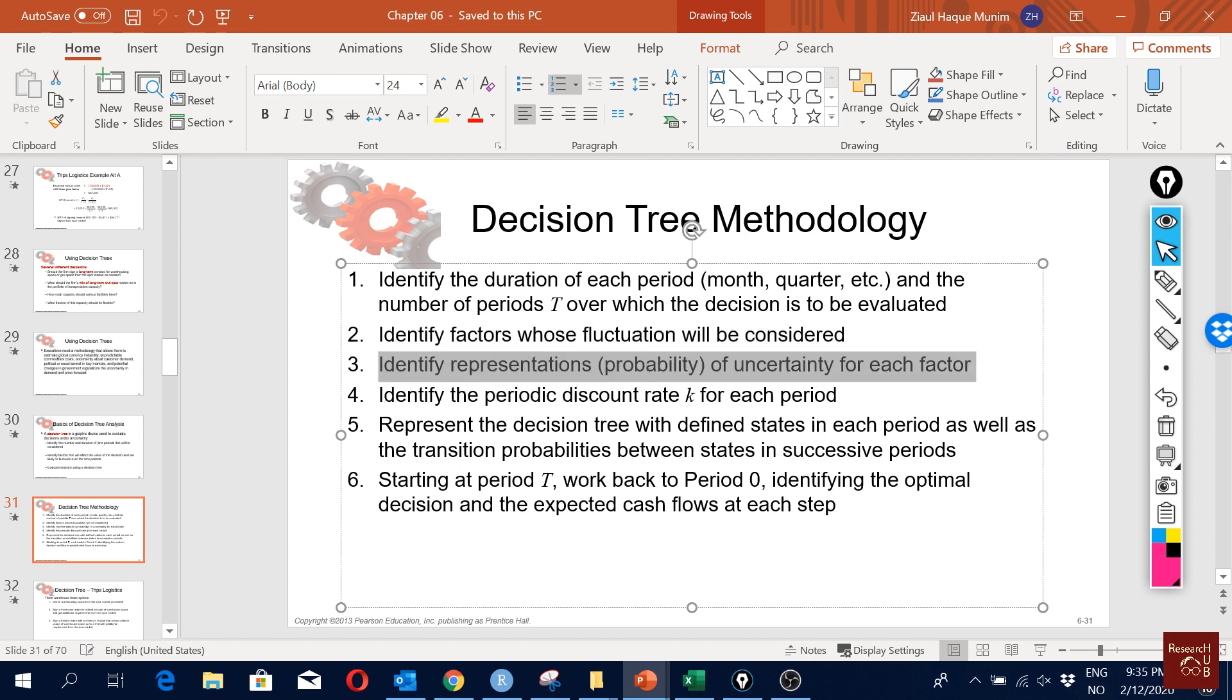We also have to consider a discount rate, periodic discount rate. Then finally we represent the decision tree with defined states in each period, as well as we look into the transition probabilities between the states in successive periods.